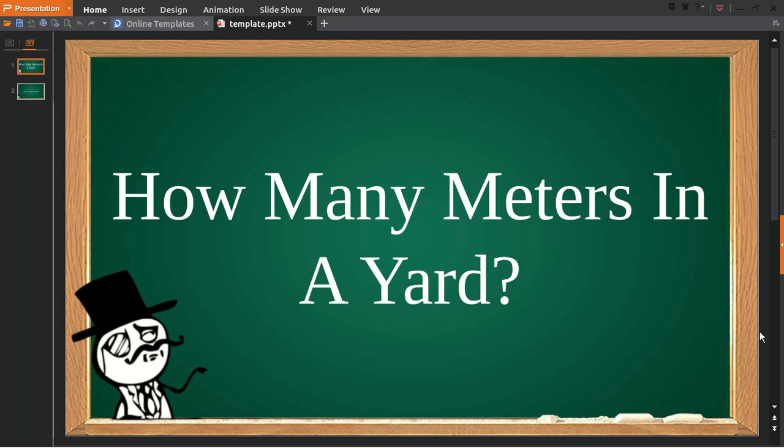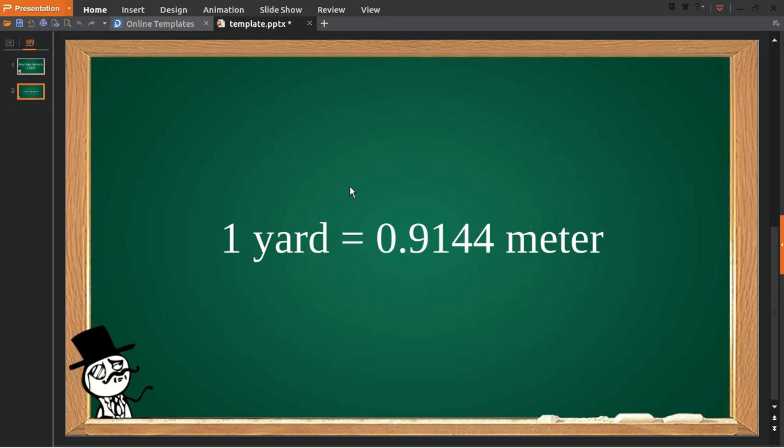Hello, what's going on everyone. In today's video I'm going to answer a question. The question is: how many meters in a yard? So this is the answer to the question. One yard is equal to 0.9144 meter.